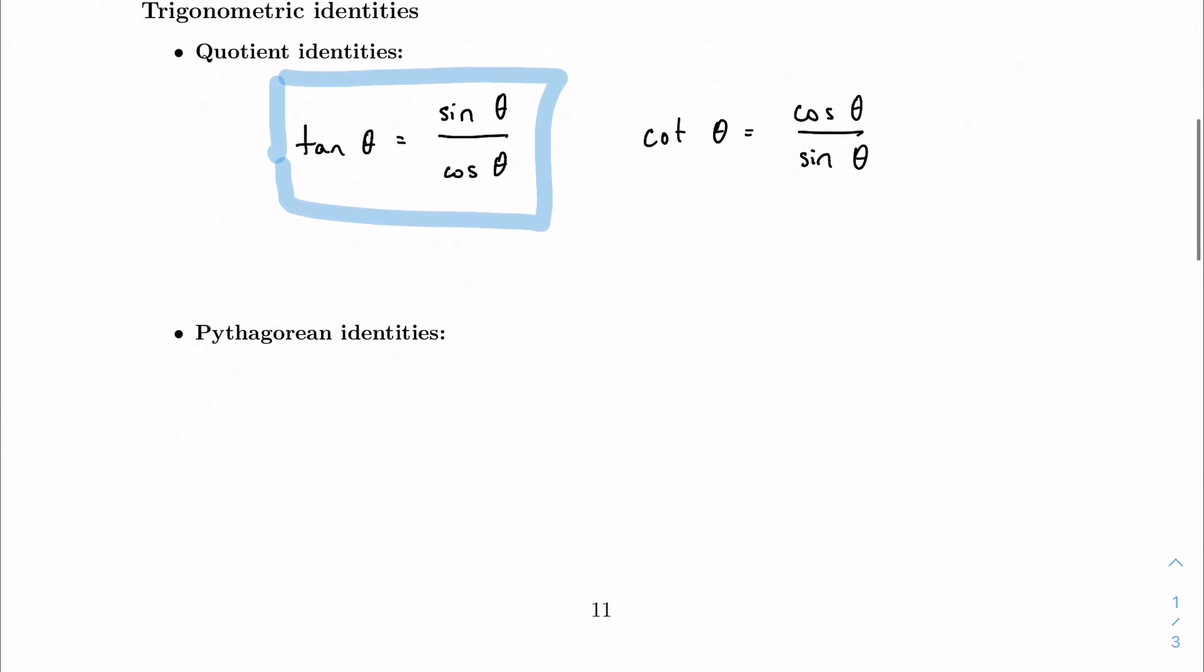We also have what we call the Pythagorean identities. And it starts off as this. It's kind of rooted in the unit circle. We're not going to go too much into the derivation of this right now, but this is kind of one of the guiding ones here. And it's sine squared plus cosine squared equals one. If you need to memorize anything, I mean, it's on your formula sheet, but if you were to memorize one, it would be this one and the tangent one. But for Pythagorean identities, this is the one.